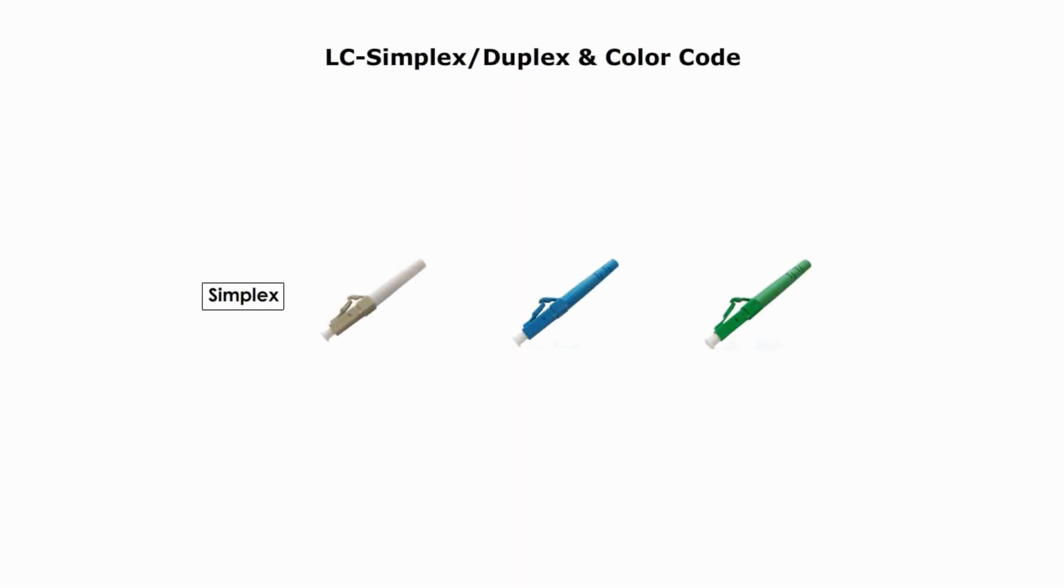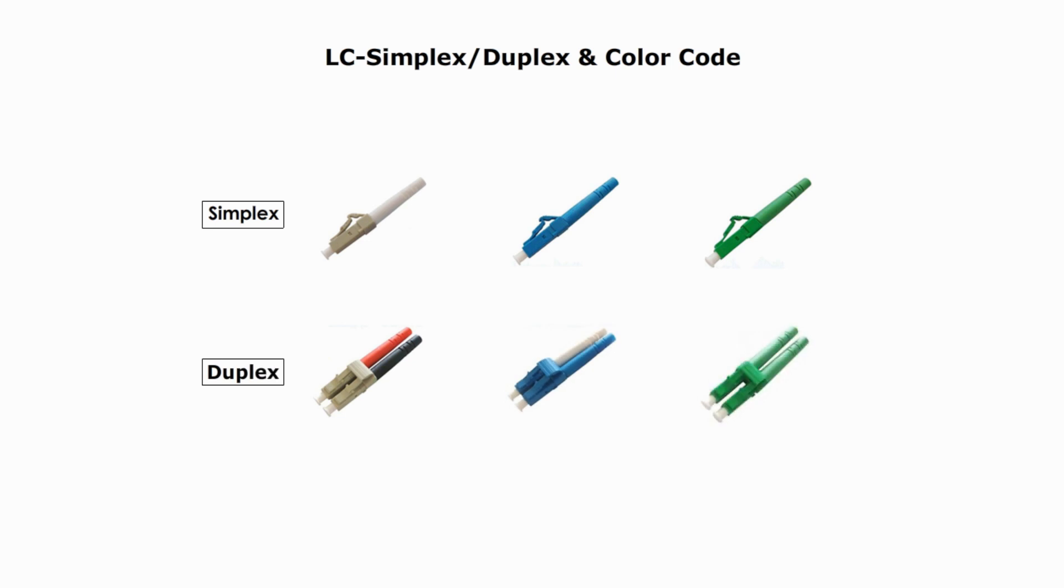Color coding for fiber can be very complicated, but we only focus on three color schemes for LC connectors here: beige, blue, and gray. We use LC or Lucent connector as an example. Beige color indicates multi-mode fiber connector. Blue color indicates LC connector ferrule polish style is UPC. Green color means single-mode connector ferrule is APC.